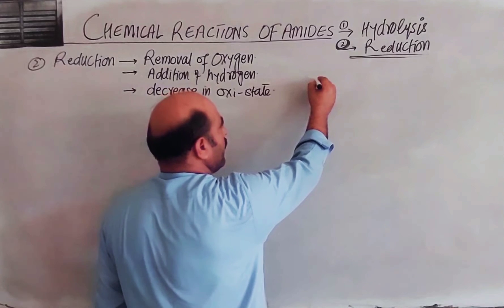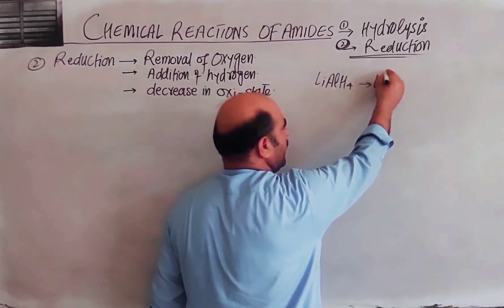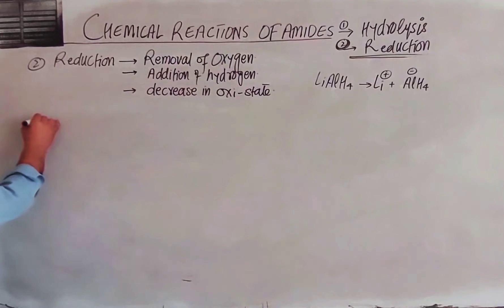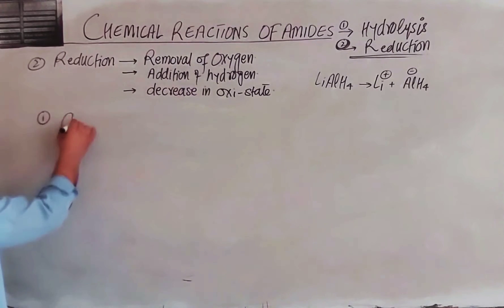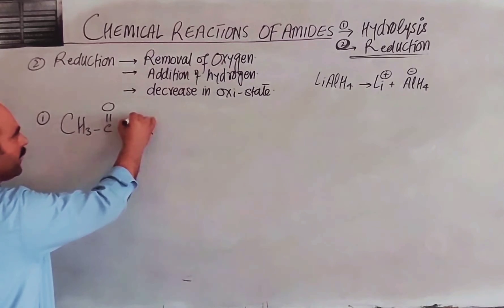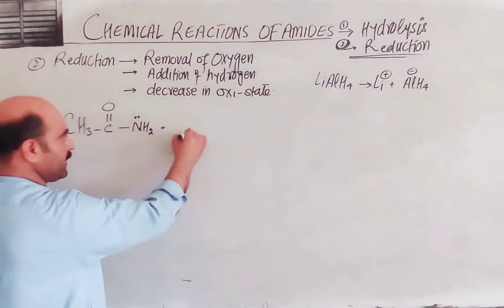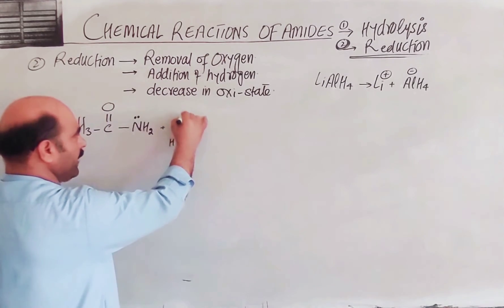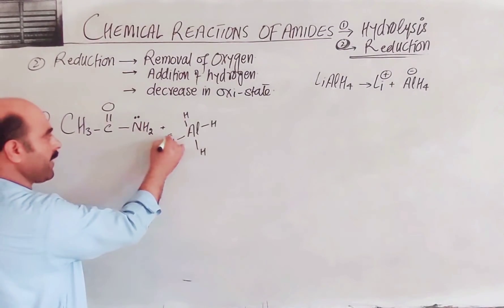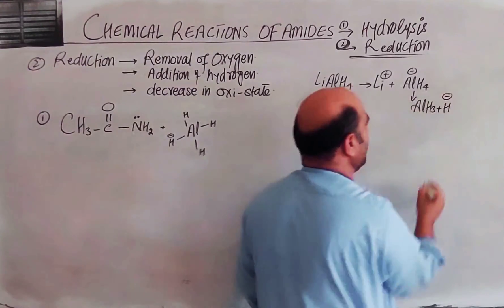In step number one, we have CH3-C(=O)-NH2. The nitrogen of NH2 has a lone pair of electrons. We add LiAlH4, which has a negative charge — this is the hydride ion. The hydride ion is provided by AlH4 minus, giving AlH3 in step number two after the hydride ion is provided.